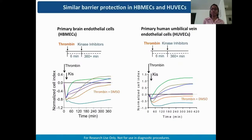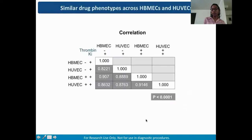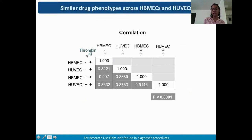In addition to brain microvascular endothelial cells, we also looked at primary human umbilical vein endothelial cells and saw very similar phenotypes — the four barrier-protective kinase inhibitors acting with similar dynamics. Comparing the full set of 28 kinase inhibitors across both cell types shows really good correlation between HBMECs and HUVECs under both resting conditions and after thrombin treatment.